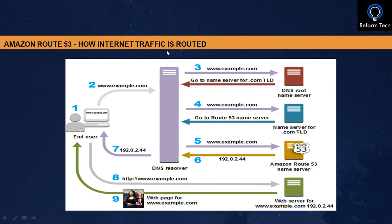Now let's look at how internet traffic is routed. This is a quick diagram showing the process. This is the end user — the customer, us — with a laptop opening the web and hitting www.example.com. The first thing that happens when you hit www.example.com is that the request goes to the DNS resolver.